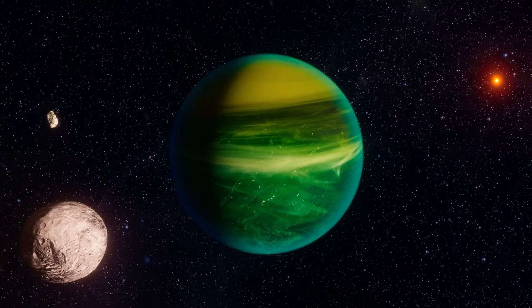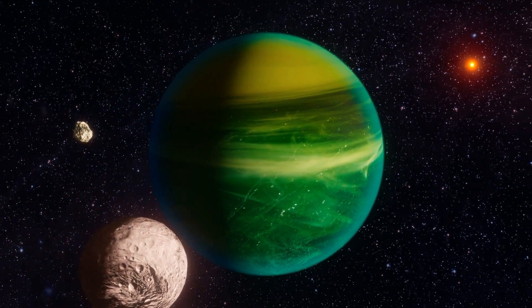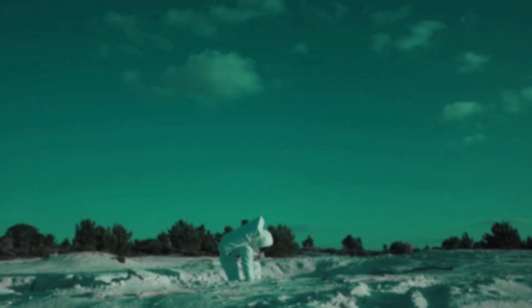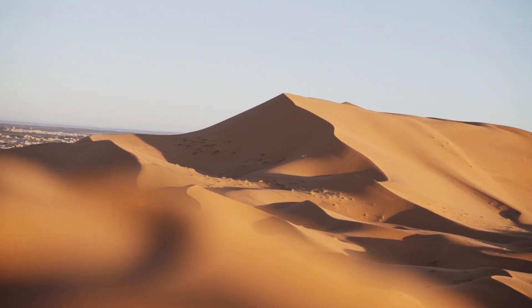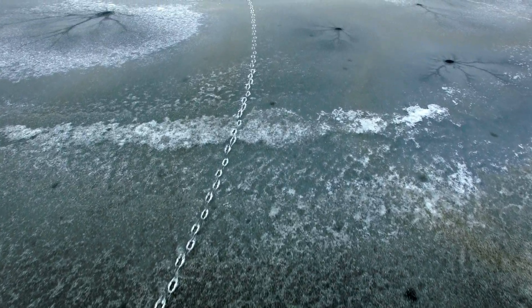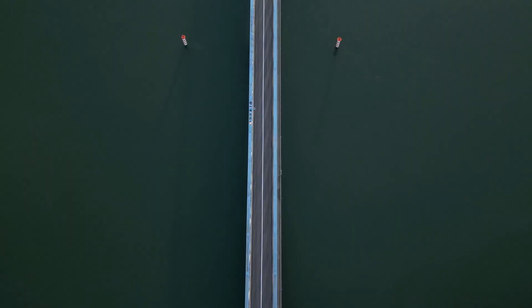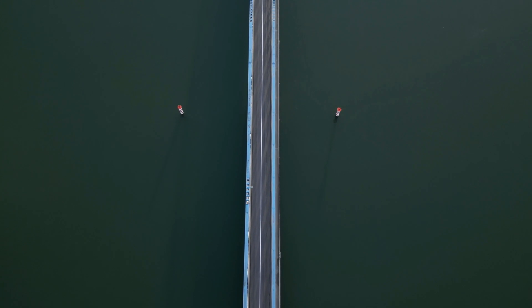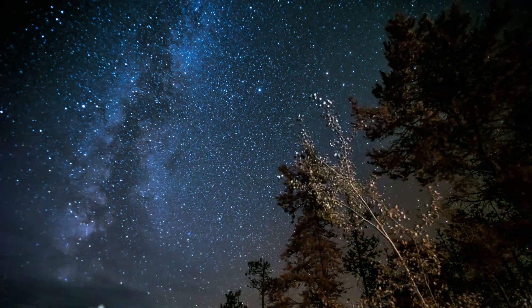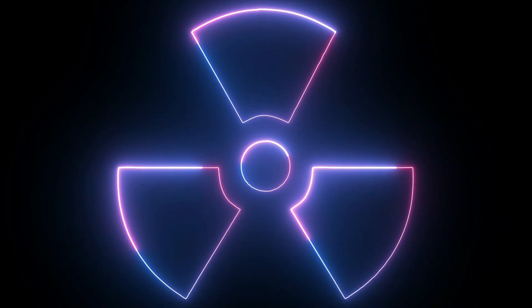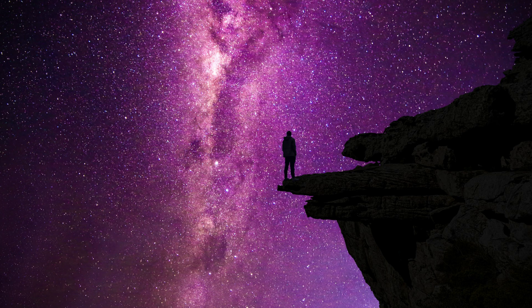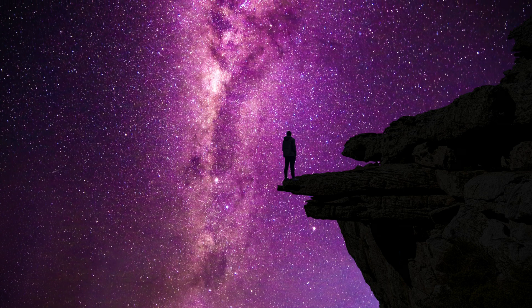You see, Gliese 581c is tidally locked to its star, meaning that one side of the planet always faces the star, while the other side is perpetually shrouded in darkness. This creates some pretty extreme conditions. The star-facing side is likely a scorching desert, while the dark side is probably a frozen wasteland. The only potentially habitable zone would be a narrow strip along the terminator, the line between day and night. And even then, life on this planet would have to contend with intense radiation and a gravitational pull significantly stronger than Earth's.